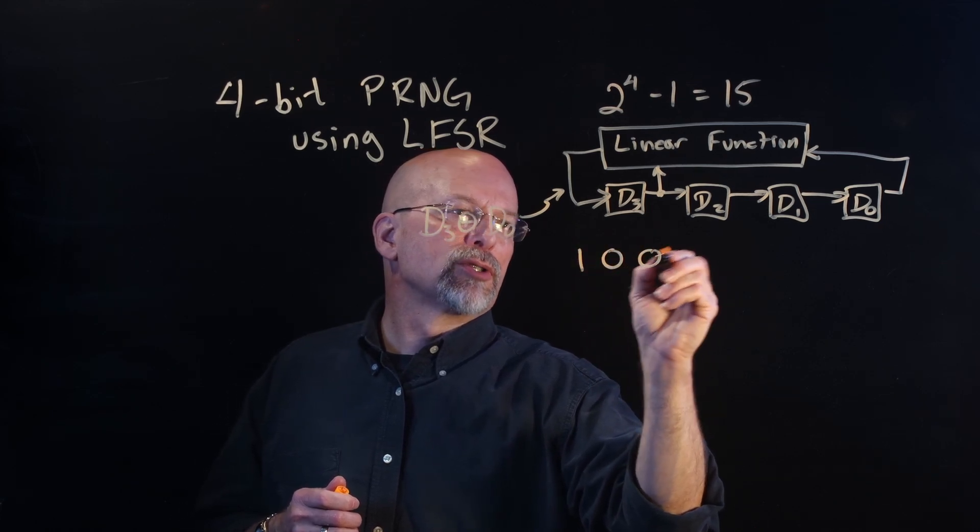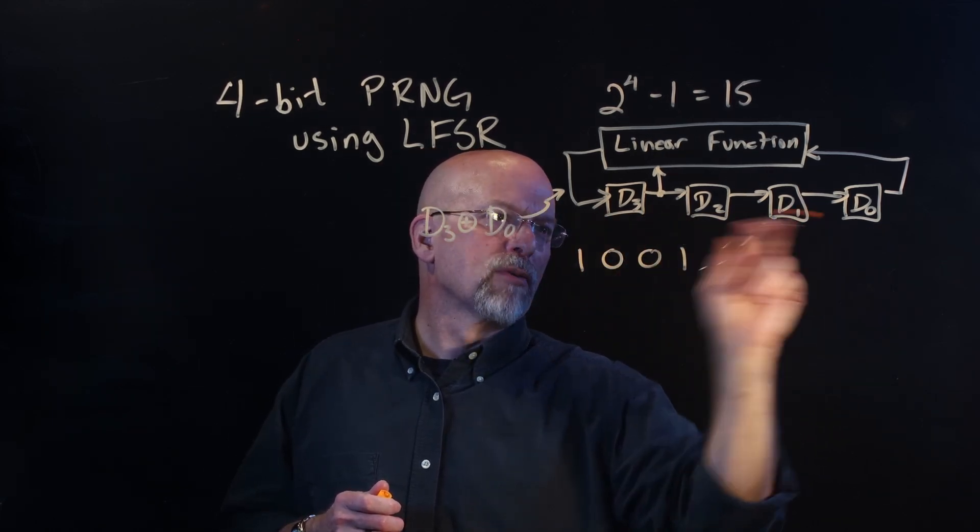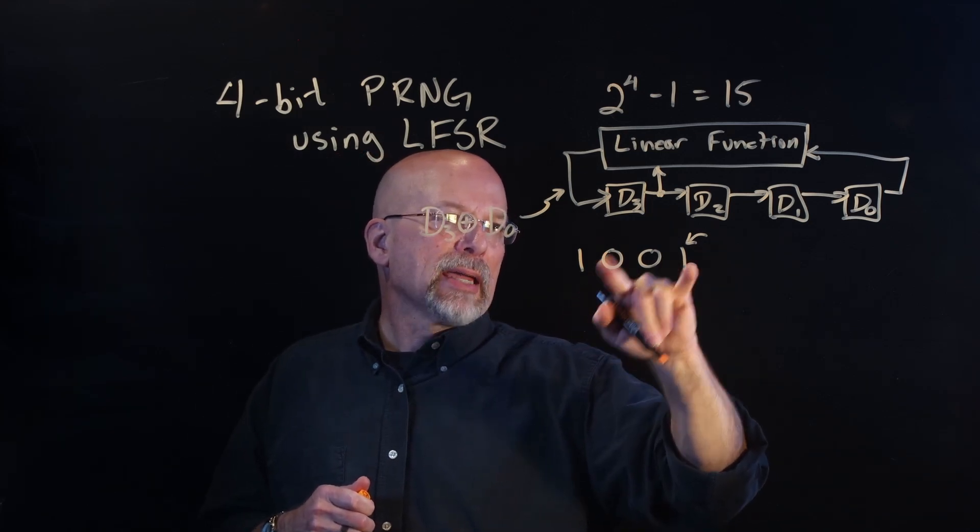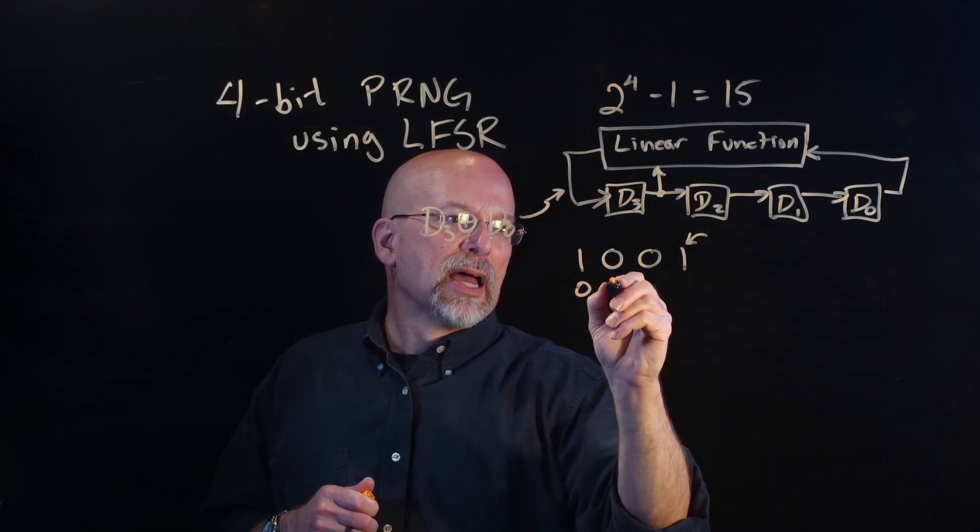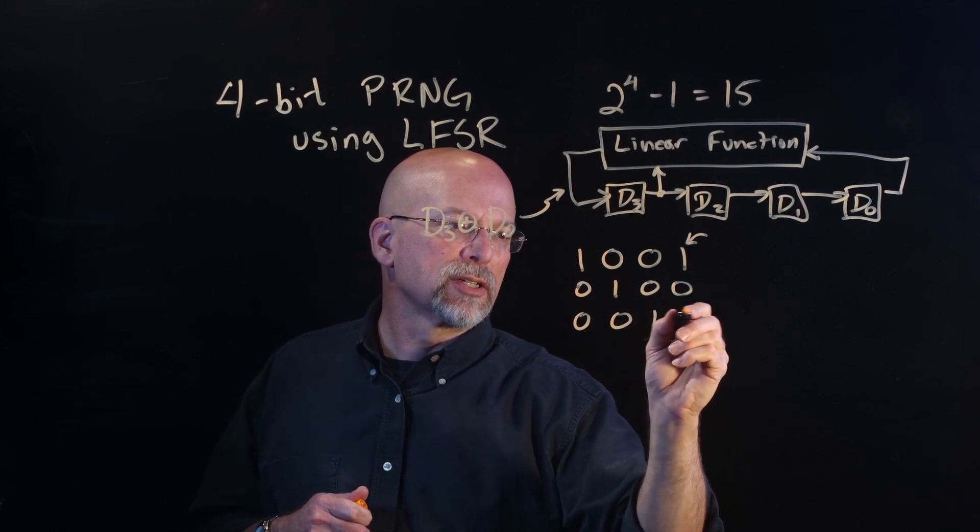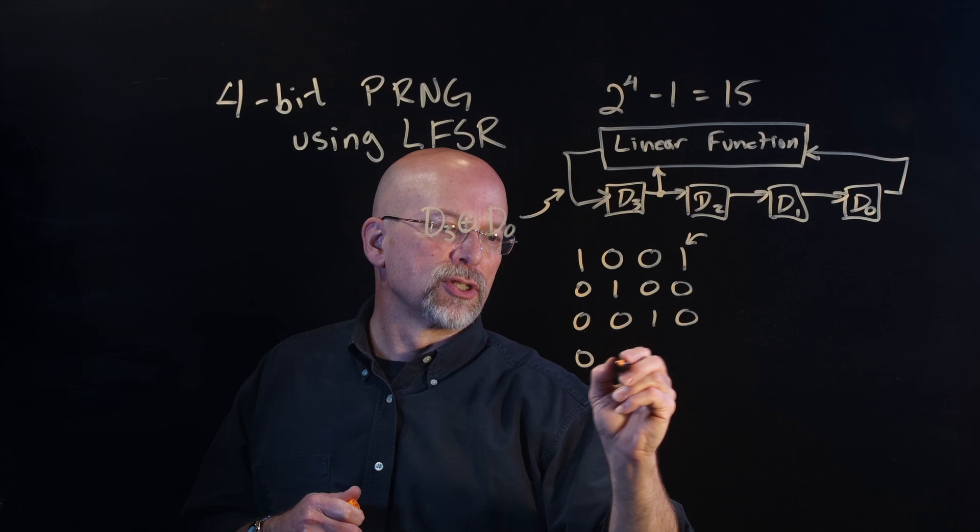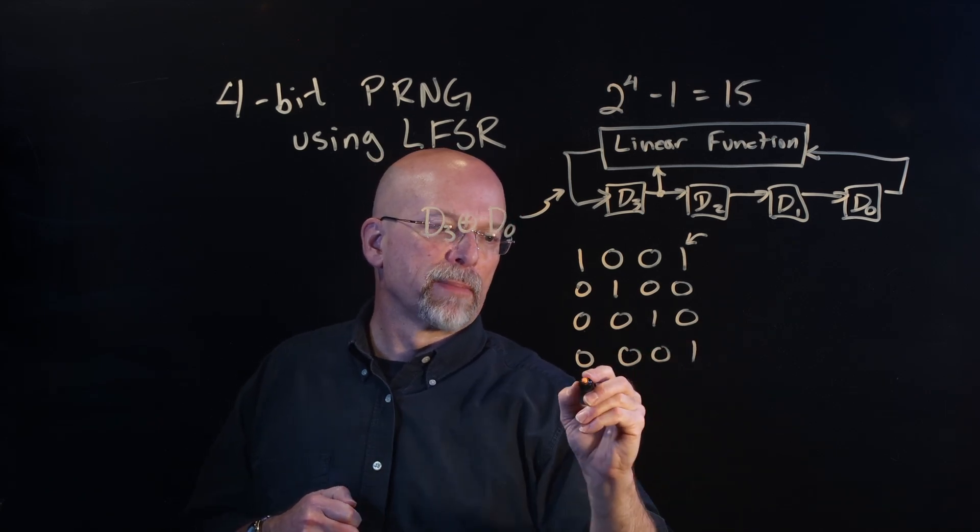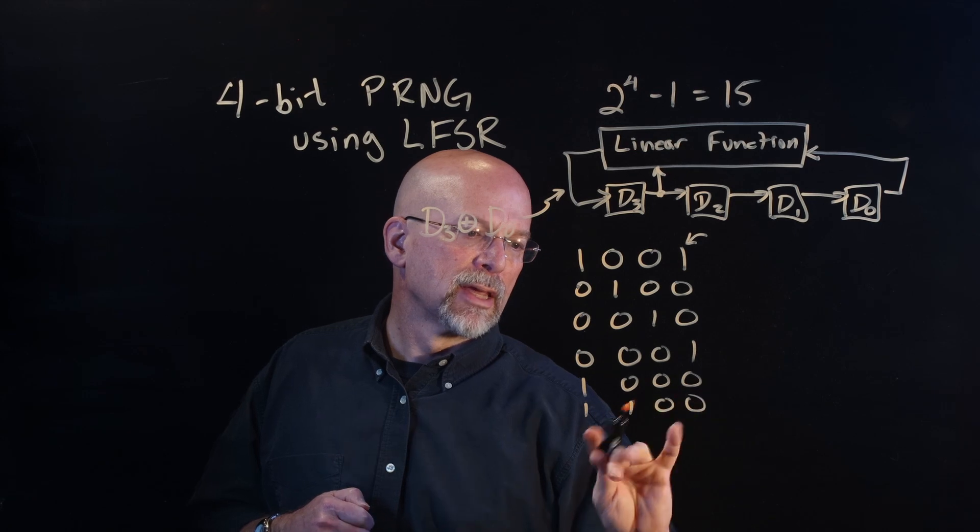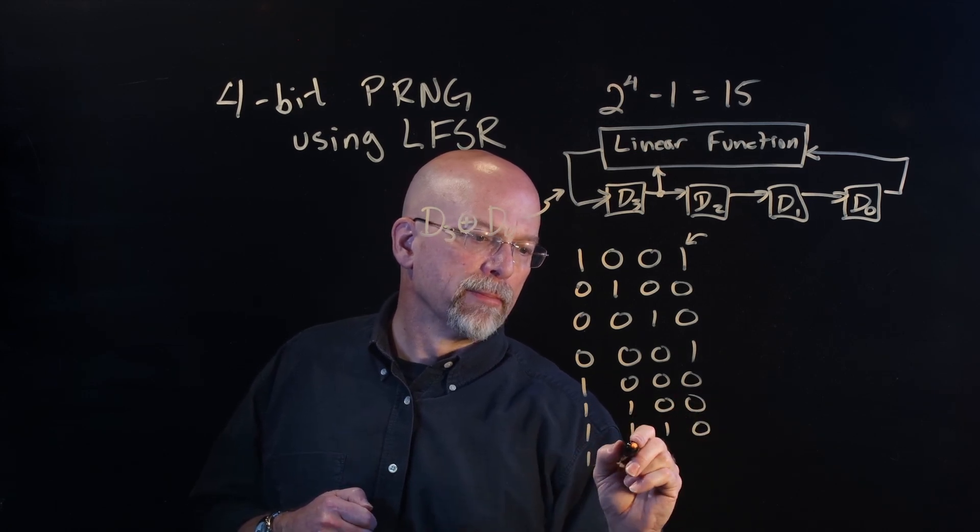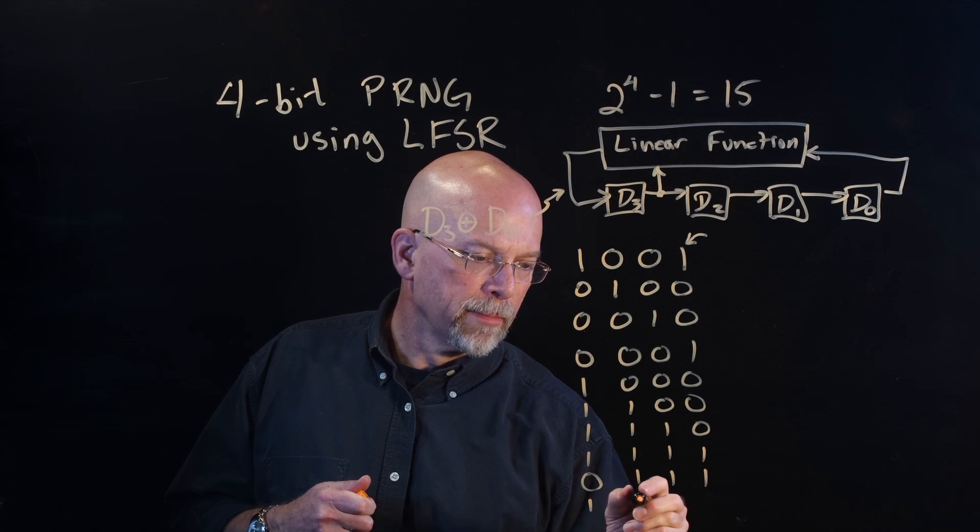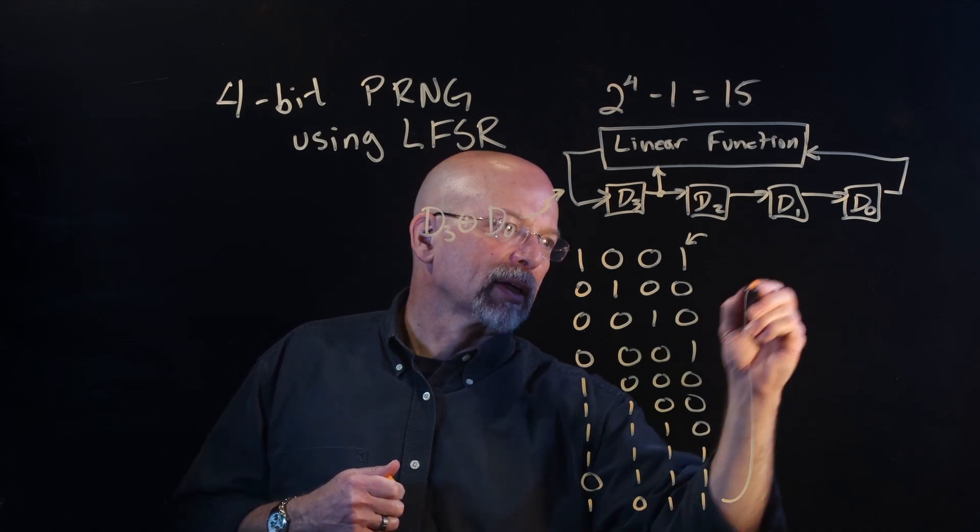So, let's start out with 1, 0, 0, 1. Those are going to be the four values in here. This last bit right here, that is going to be the stream that we're looking at. We've got the same, so D3 and D0 are the same, and we shift everything one position to the right. Same, so a 0 gets shifted in. Same, another 0. Different, we've got a 1. Different, 1. Different, 1. Different, 1. Same, 0. Different, 1. We're going to come up here, because I'm running out of board space.